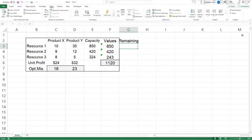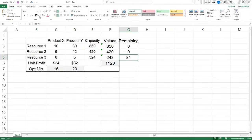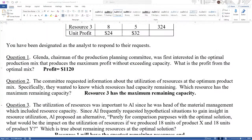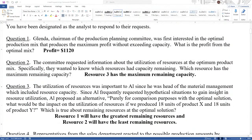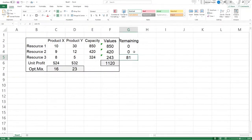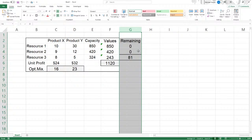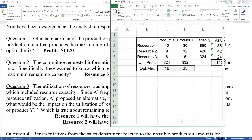So this question, we can say remaining here. Well, that's simply going to be the capacity minus the values. And then copy that down. That's all there is to it. Resource three, then. And there's the answer to this one. Resource three has the maximum remaining capacity. The other two at the optimal solution have zero remaining. So they're 100% utilized. Let's go on.